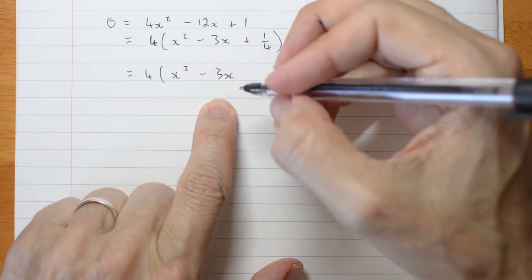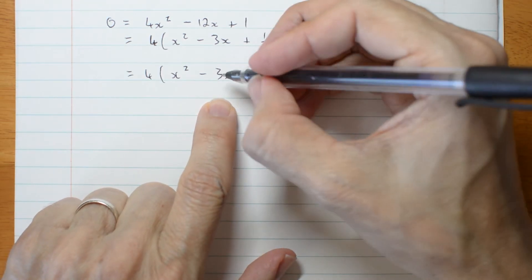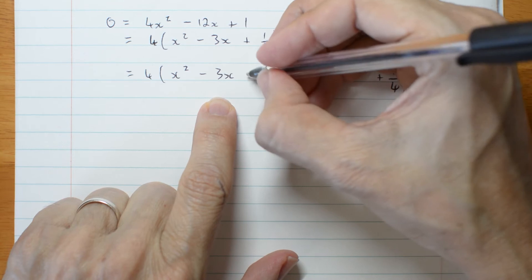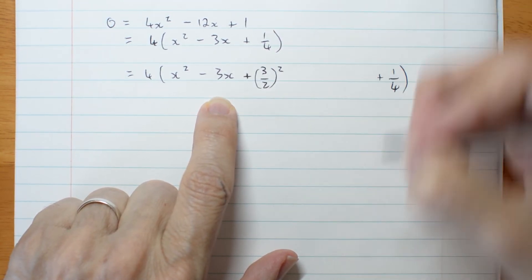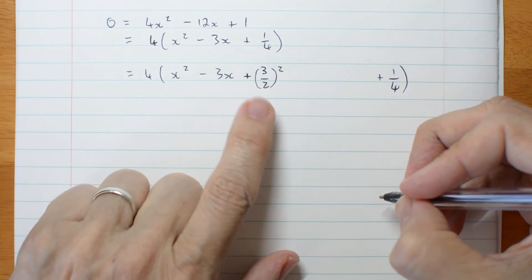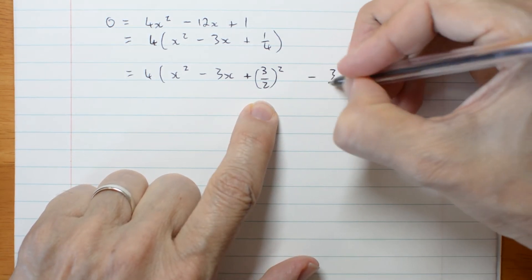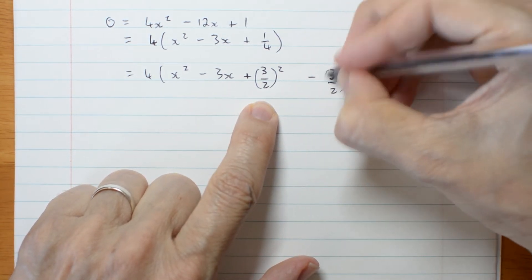To complete the square I need to have half of this squared. Always add 3 on 2 squared. But if I've added 3 on 2 squared I better subtract 3 on 2 squared.